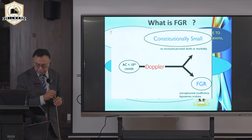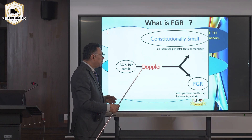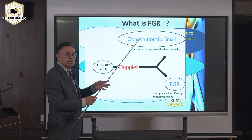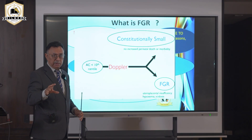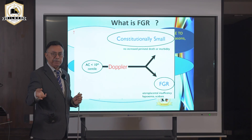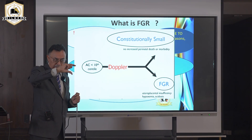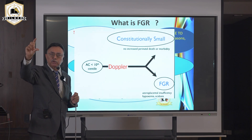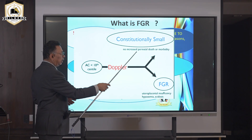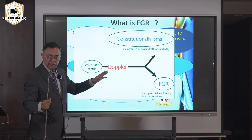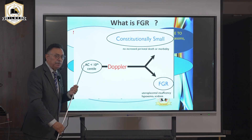Abdominal circumference and estimated fetal weight are the best two parameters, along with Doppler. If the Doppler is normal, it is not growth retardation — even if the baby is small, it may be constitutionally small with small parents. It follows a normal growth pattern and no intervention is needed; there is no increased perinatal mortality.